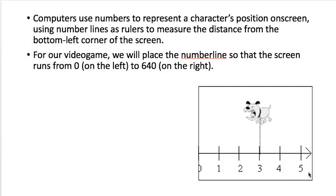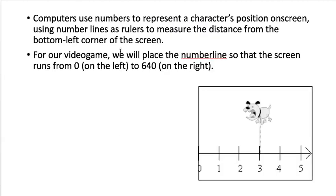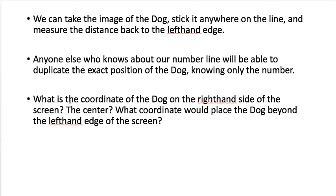So it would always be 640 on the right. We can take that image of the dog, put it anywhere on the line, and then measure the distance back to the left-hand side. Anybody else or any part of the system that knows can figure out the exact position of the dog by knowing where he is on the number line. Think about where he would be if he was off the screen.